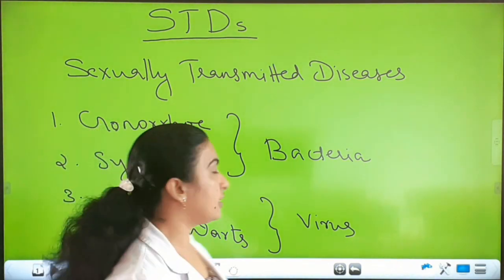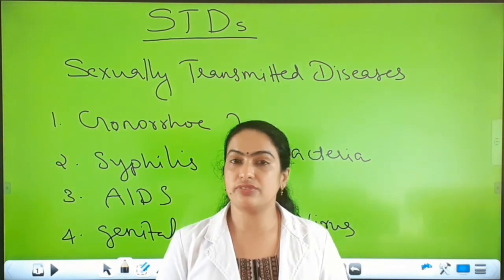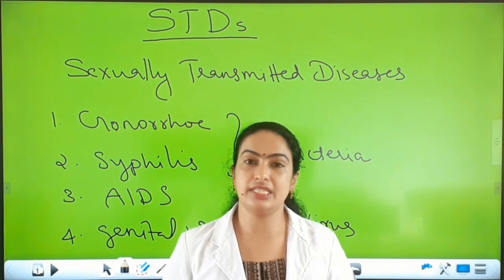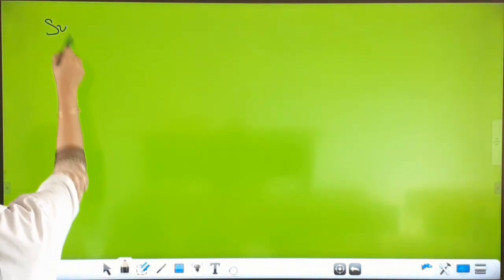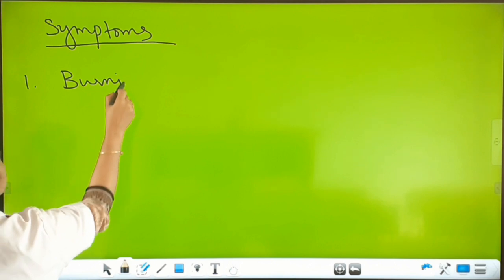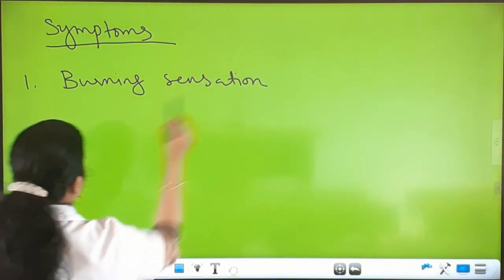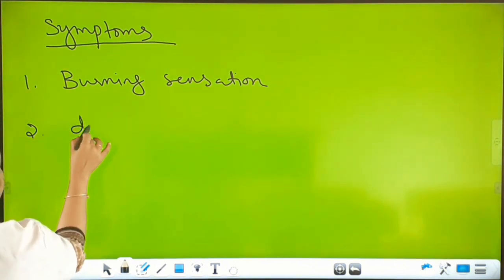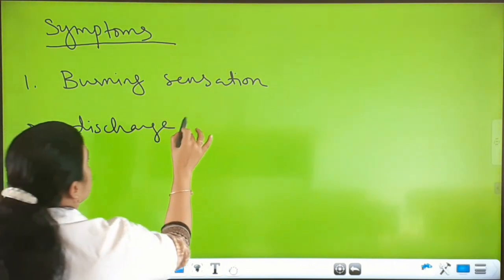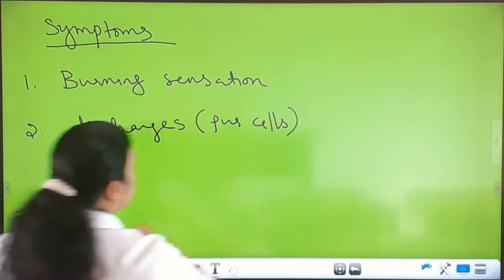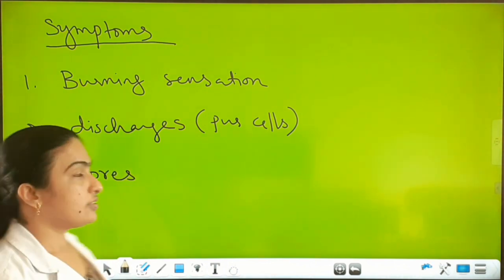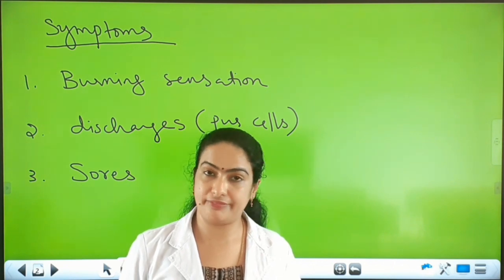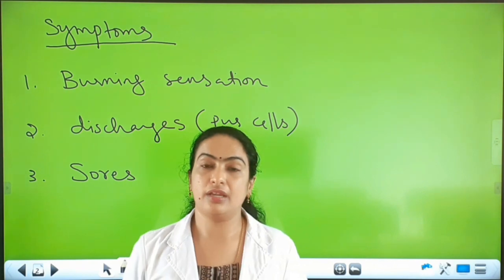Now we can see the symptoms of gonorrhea and syphilis. Gonorrhea and syphilis are STDs and the symptoms are: burning sensation at the time of urination, discharges such as pus are present in the urine, and sores in the genital area. These are the major symptoms of gonorrhea and syphilis, and these diseases are curable.